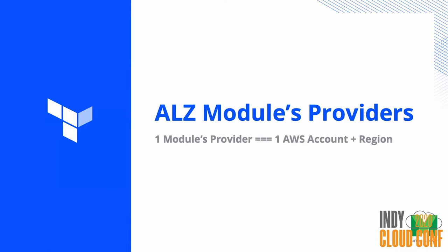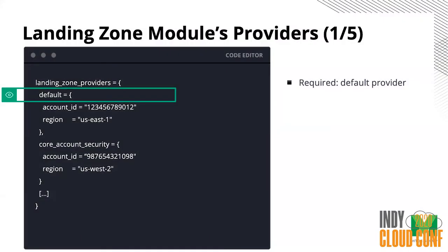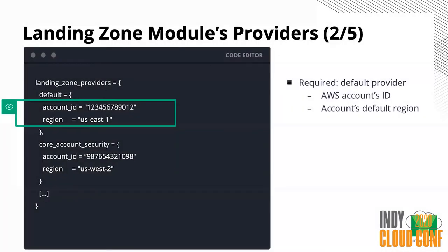Going into the providers: we have more or less an unwritten rule that we're using one module's provider per one AWS account plus region. So if I go into my definition of the providers variable, this is the structure. It is required to have one default provider, which matches to your core master account. In this provider, you need to pass an account ID and a default region.